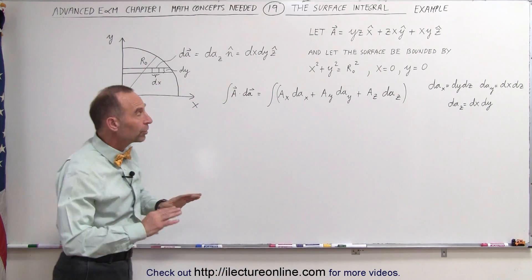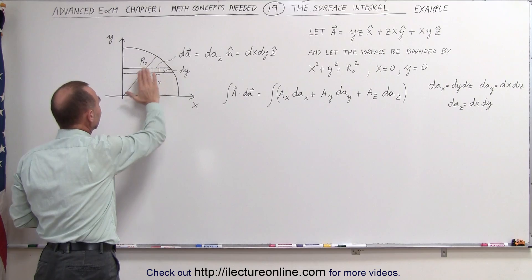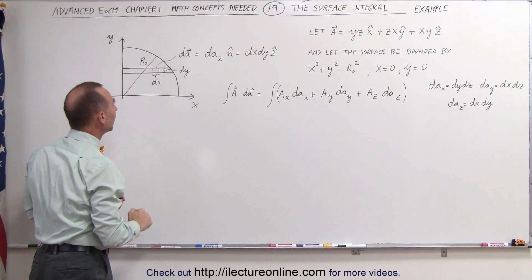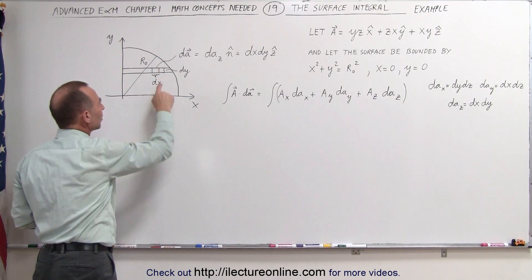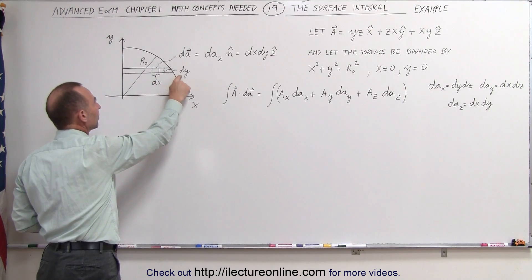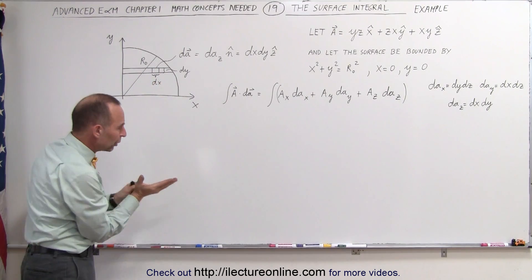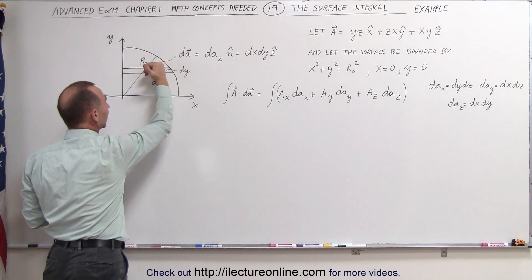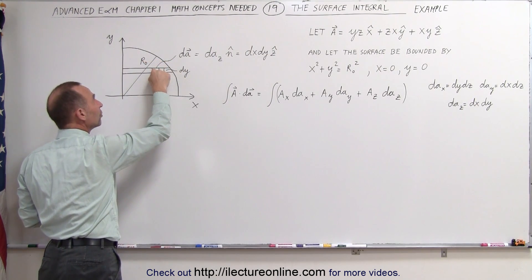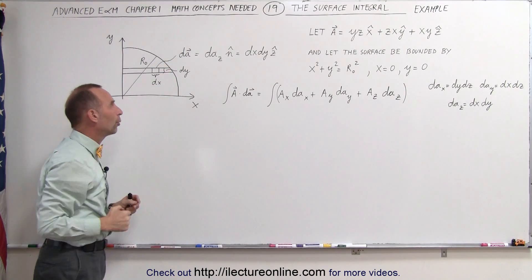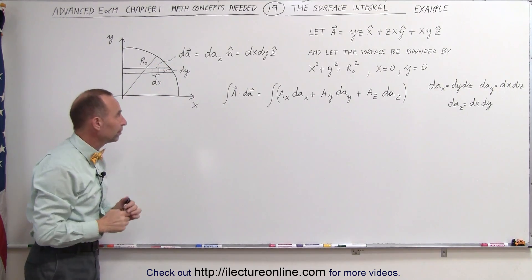We're going to multiply the vector field with an area — it's a quarter circle in the xy plane. The radius of the quarter circle is r-sub-naught, and here's a small area element dx times dy. Notice that if you use your right-hand rule and curl your fingers around the small area element, your thumb will point outwards, which means the unit vector is pointing directly outwards in the positive z direction.